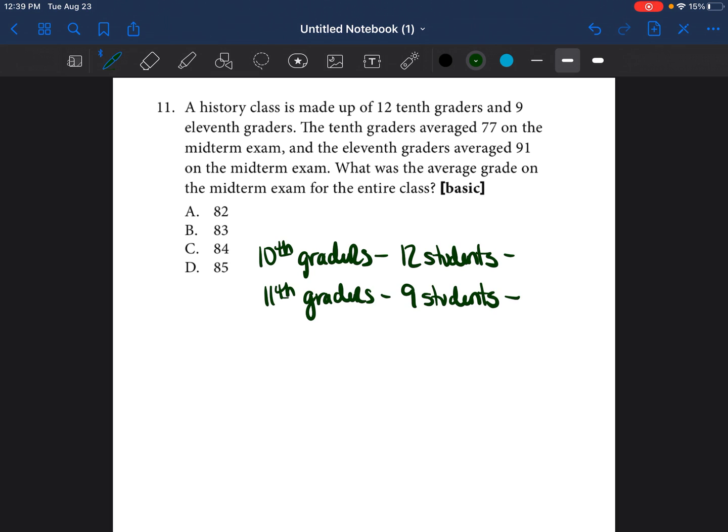And then it says the tenth graders averaged 77 on the midterm exam. So I'm going to write that 77 is their average. And it says, and the eleventh graders averaged 91 on the midterm exam. So 91 was the eleventh graders average. So the question is, what was the average grade on the midterm exam for the entire class?